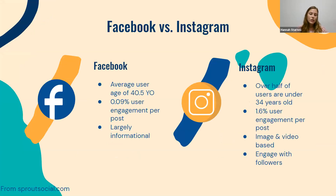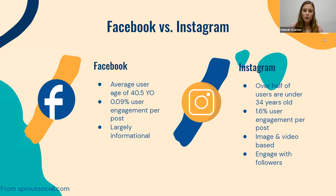Now let's talk about the demographics between Facebook and Instagram. Although they are both social media sites, they do have different demographics. The average Facebook user is 40 to 41 years old, versus Instagram where over half of the users are under 34 years old. When promoting our program to college students, most of them are going to be under 34 and do use Instagram. As far as engagement goes, Facebook has 0.09% user engagement and Instagram has 1.6% user engagement per post.